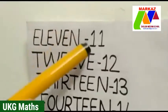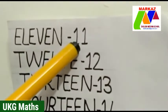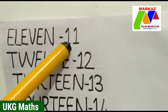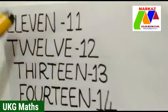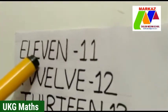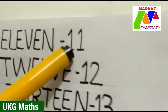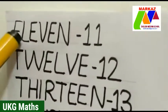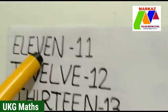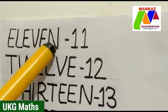Today we will learn the remaining numbers. That is which number? Yes, 11 to 20. Are you ready to study the number names? Let's start. Children, which number is this? This is number 11. What is the spelling of 11? E-L-E-V-E-N, 11.